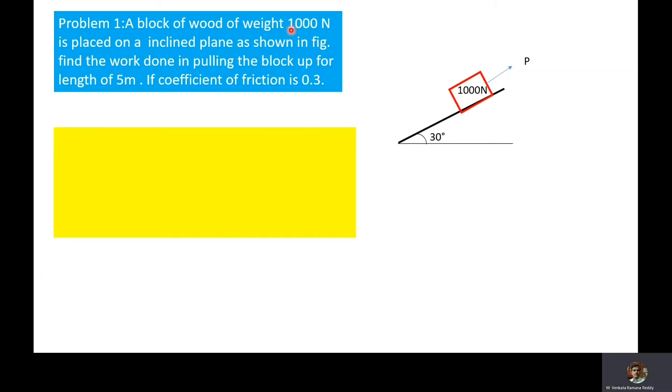A block of wood of weight 1000 newtons is placed on an inclined plane as shown in the figure. Find the work done in pulling the block up for a length of 5 meters if the coefficient of friction is 0.3.